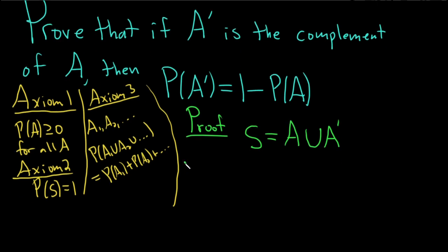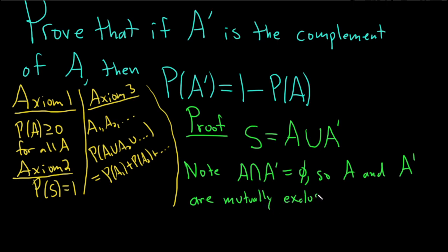And note, just mention that if you take the intersection of A with the complement of A, you get the empty set. So A and A prime are mutually exclusive. That's what it means to be mutually exclusive.